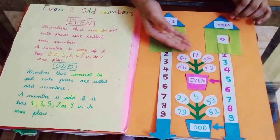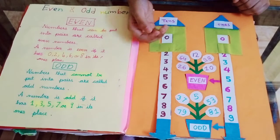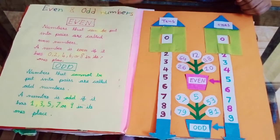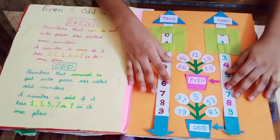12. Now how do we understand that 12 is an even or odd number? See, as I told you, 2 is an even number, and 12 is an even number.